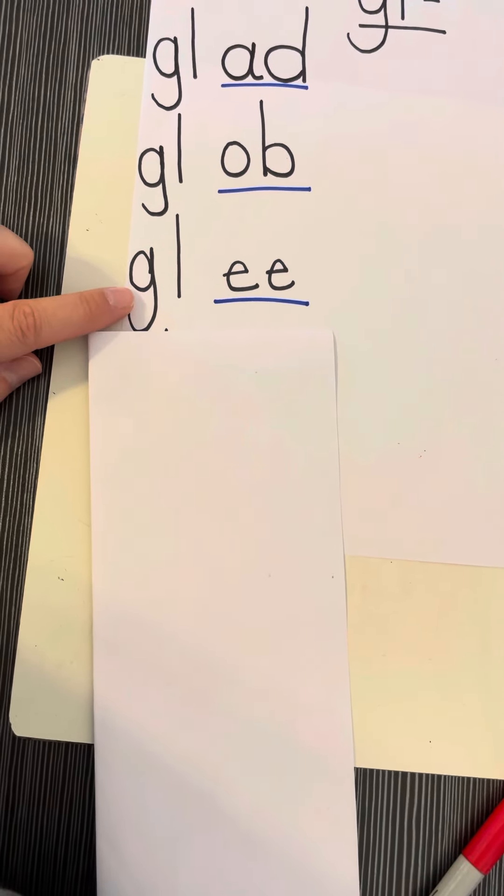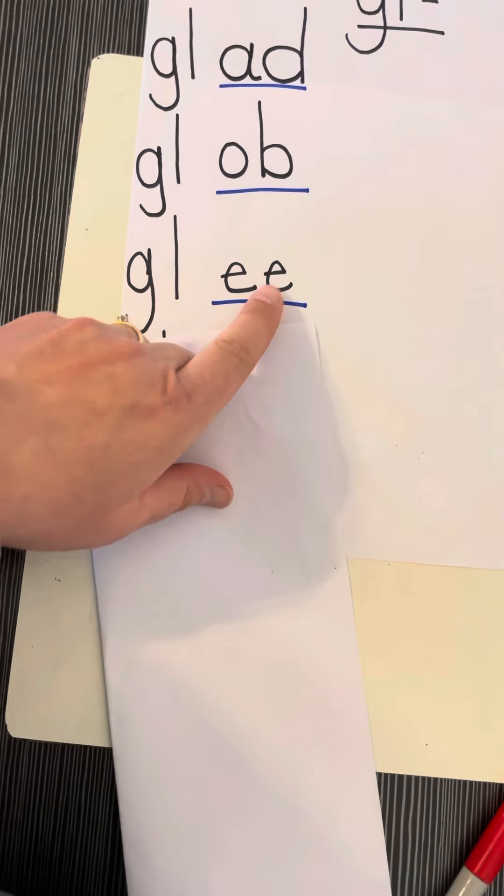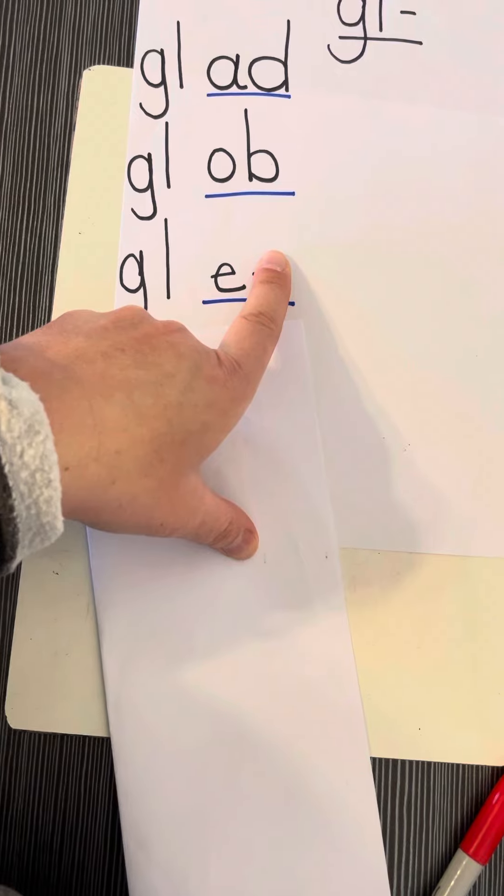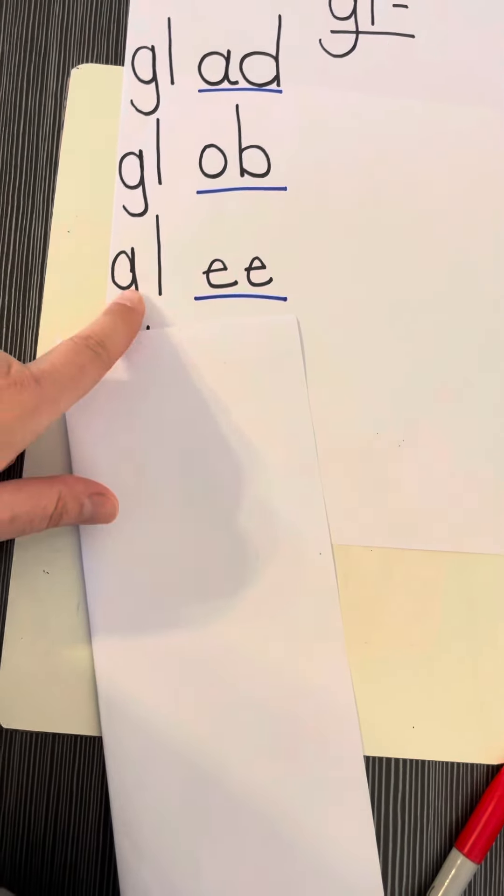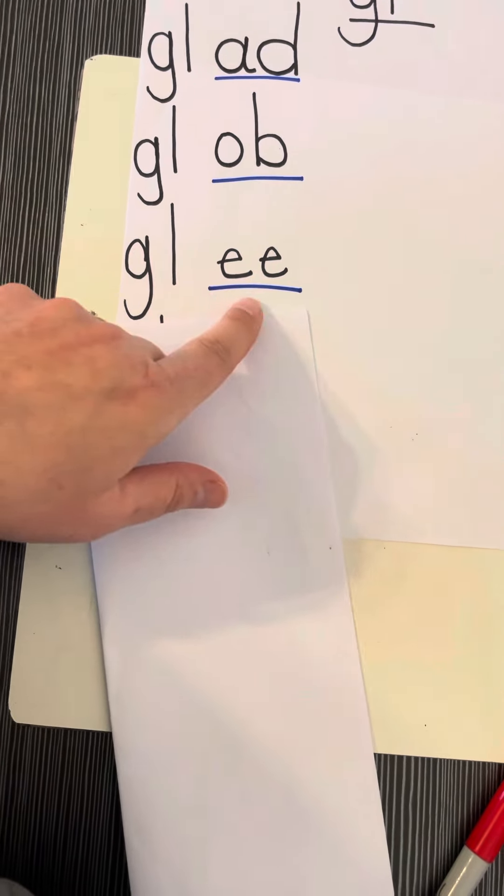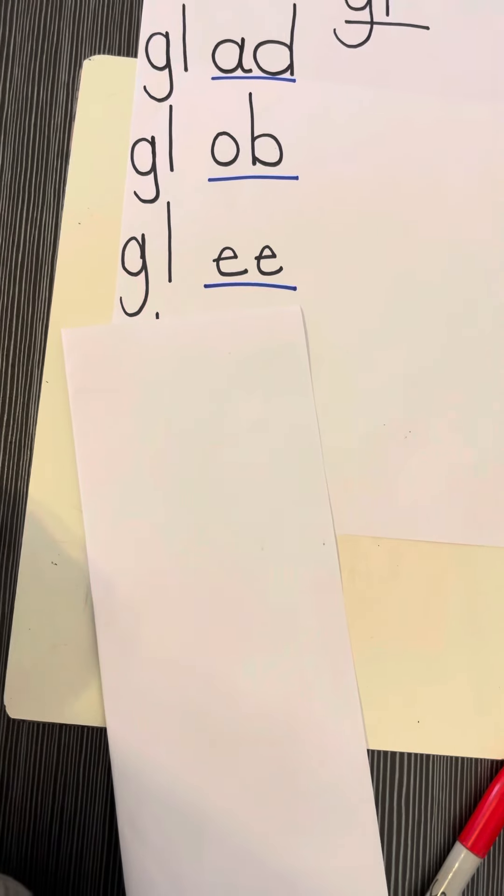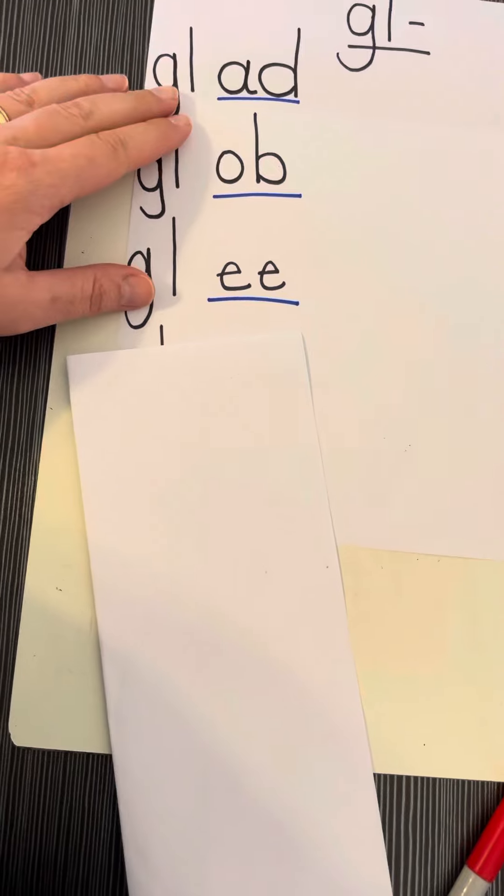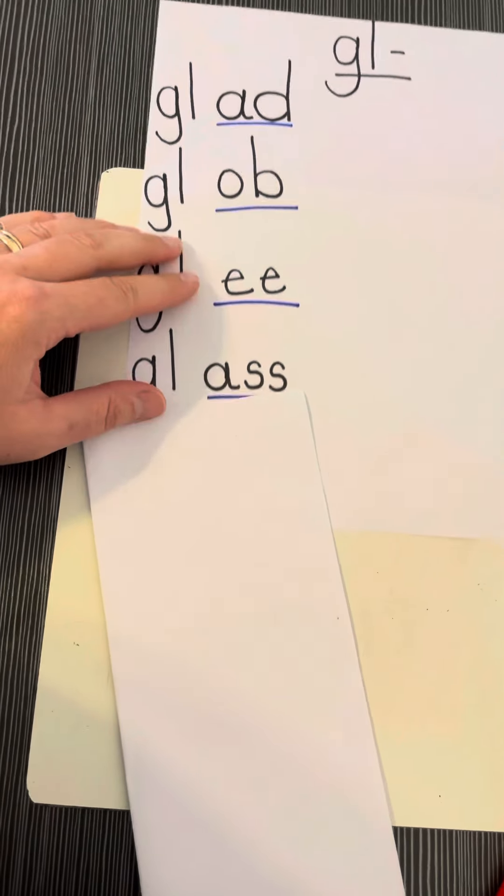Next one, GL says 'ghoul'. Two vowels together, you're only going to hear the first vowel, so it makes an E sound, long E, hard E sound. Ghoul-E, ghoul-E, glee, glee. You're joyful, you're happy, you're full of glee.